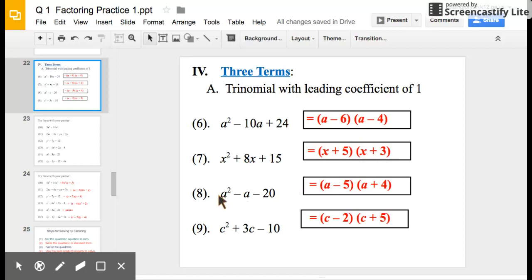Now on number eight, it was a little different. We had to look at positives and negatives here, and we listed the factors of 20, which were 1 and 20, 2 and 10, and 5 and 4. I needed the factors of 20 to sum to give me a negative 1. That's the coefficient of this a here.